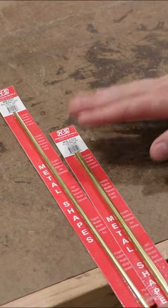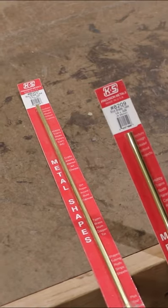So I'm going to add a little bling to my drawers. So to reinforce the drawers, I'm going to use K&S Precision Metals.